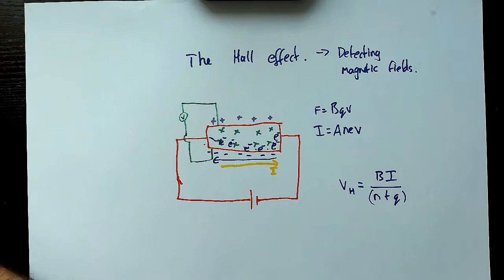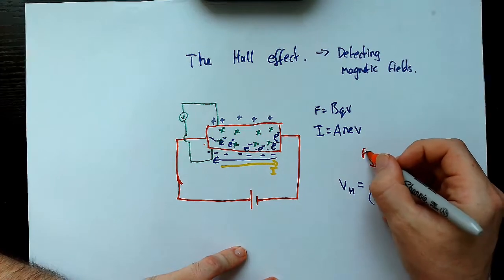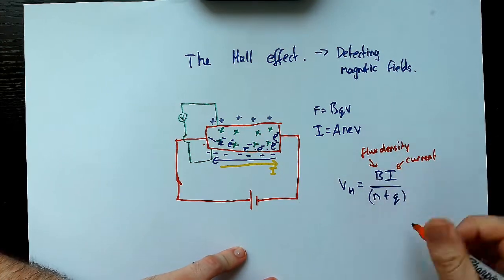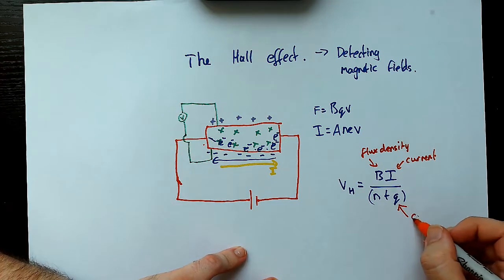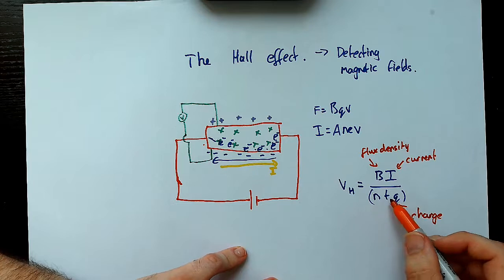So let's write down some of those ones that we've identified there so that we can make a note on them. So let's do here. So we've got current, we've got flux density, and down here we've got the charge.